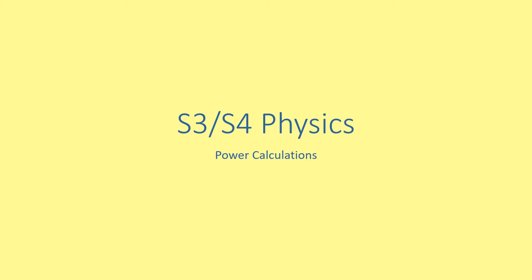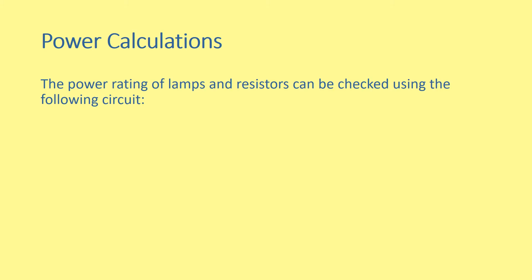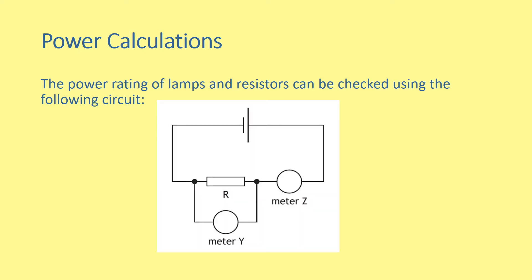S3S4 Physics, Power Calculations. The power rating of lamps and resistors can be checked using the following circuit. We have two meters here: meter Z and meter Y. Meter Z is our ammeter, measuring current. Meter Y is our voltmeter, measuring voltage. We can use these in order to calculate power.